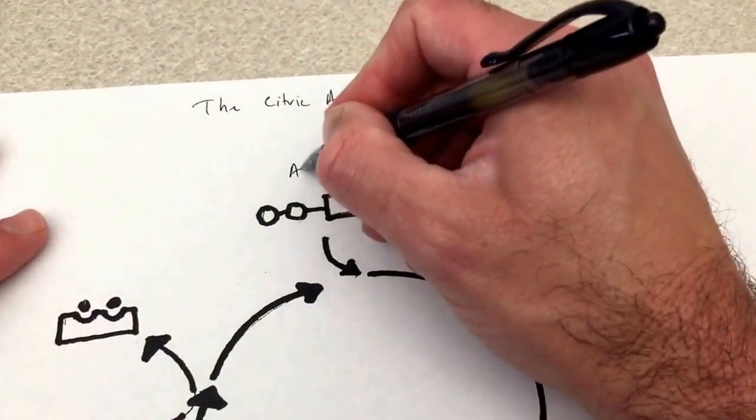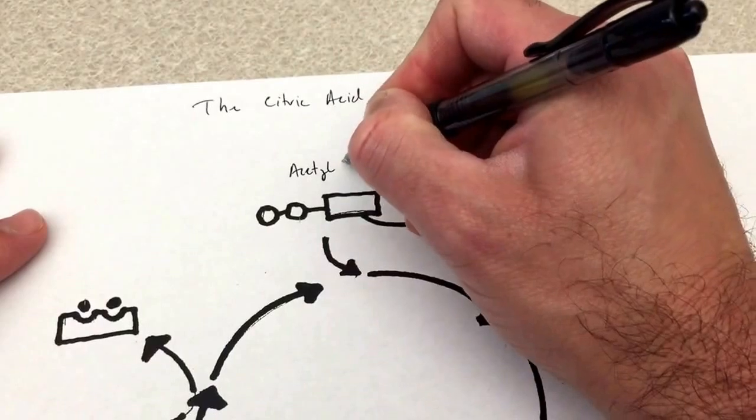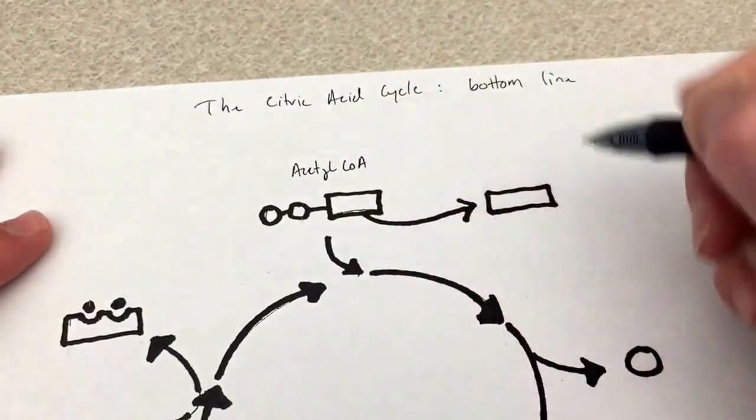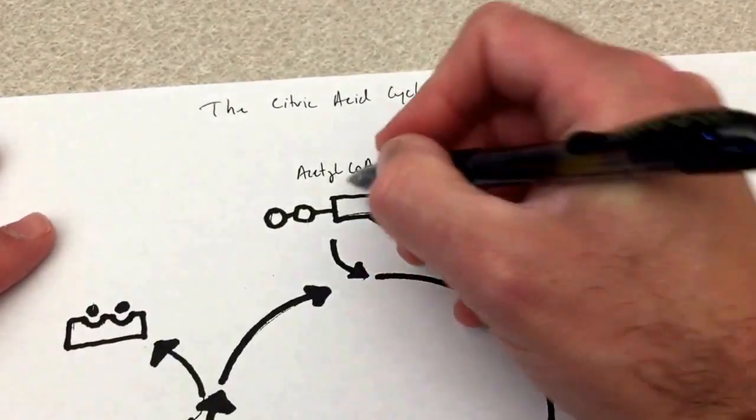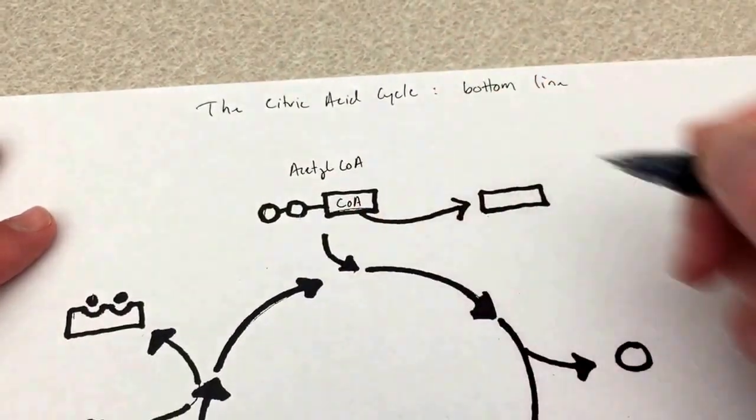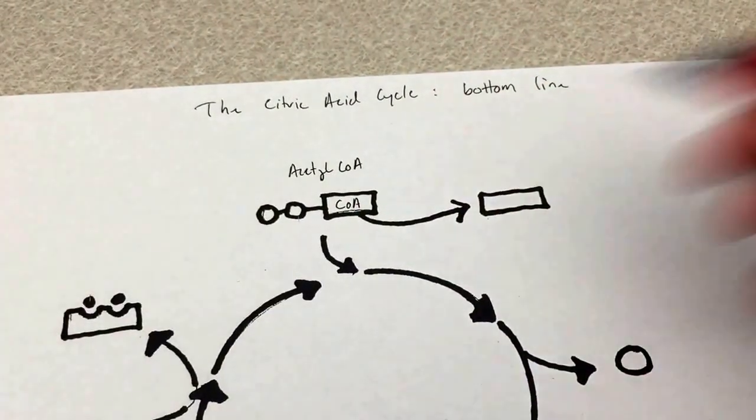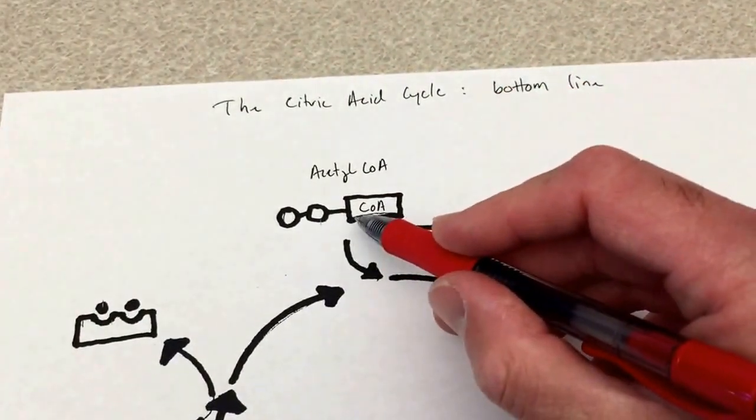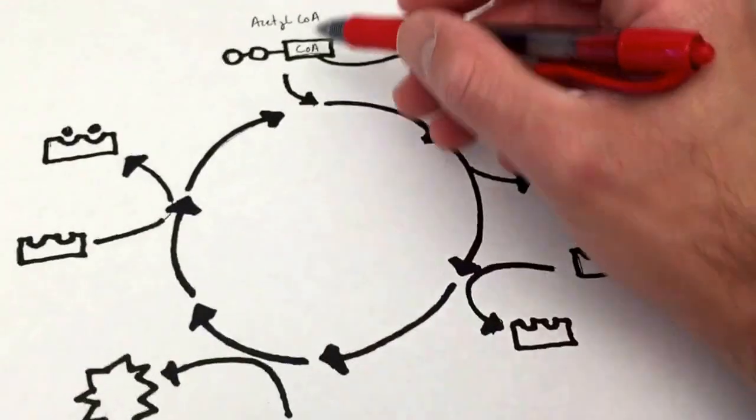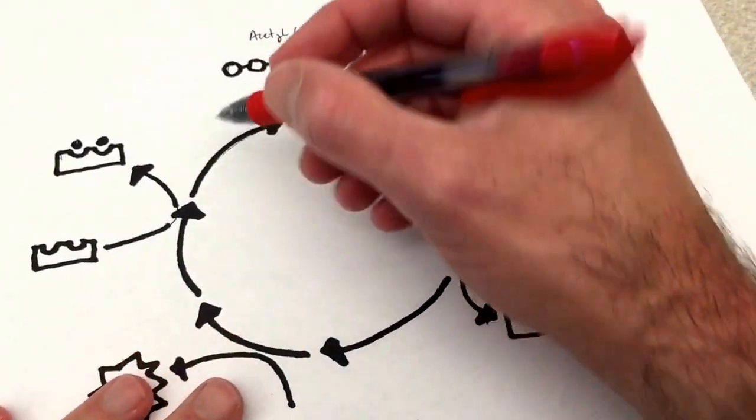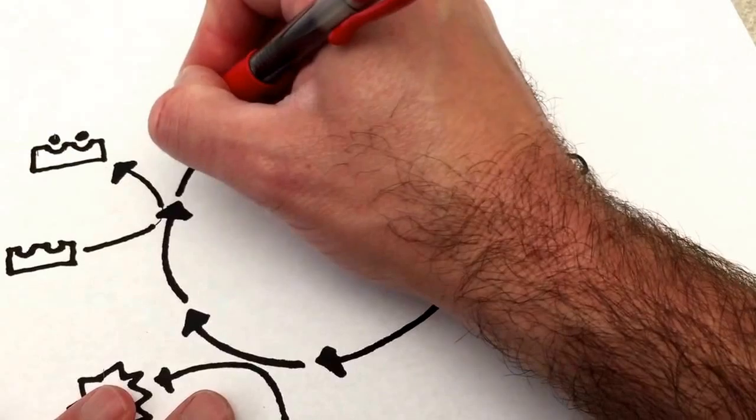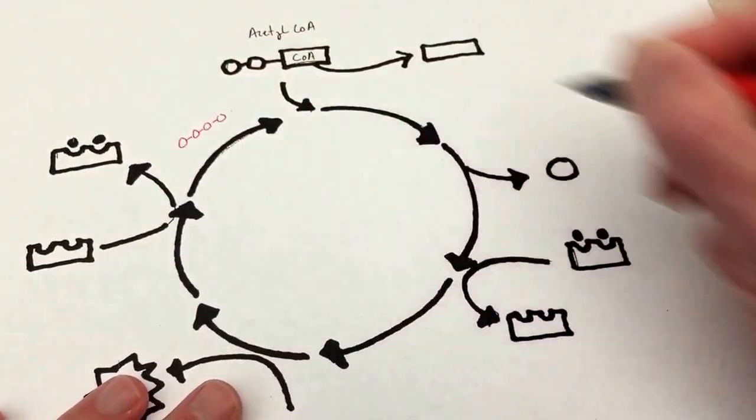In the lecture I said that acetyl CoA, this two carbon molecule with a CoA group, is like wood that's being added to a fire. The dying embers of the fire are a four carbon molecule called oxaloacetate.